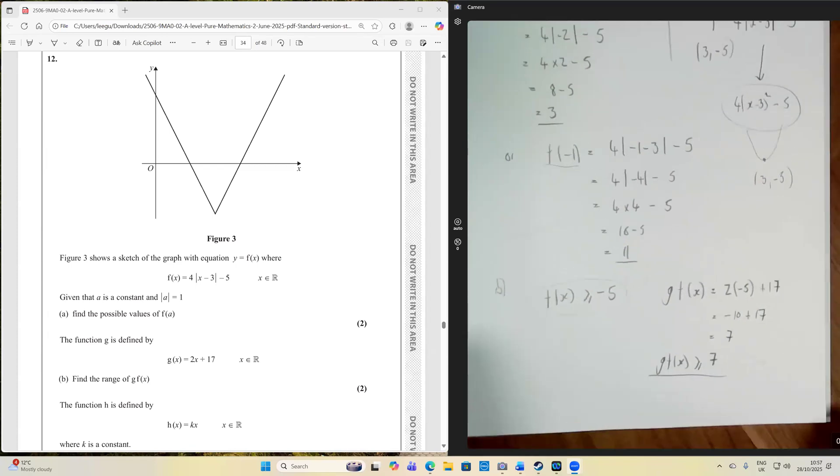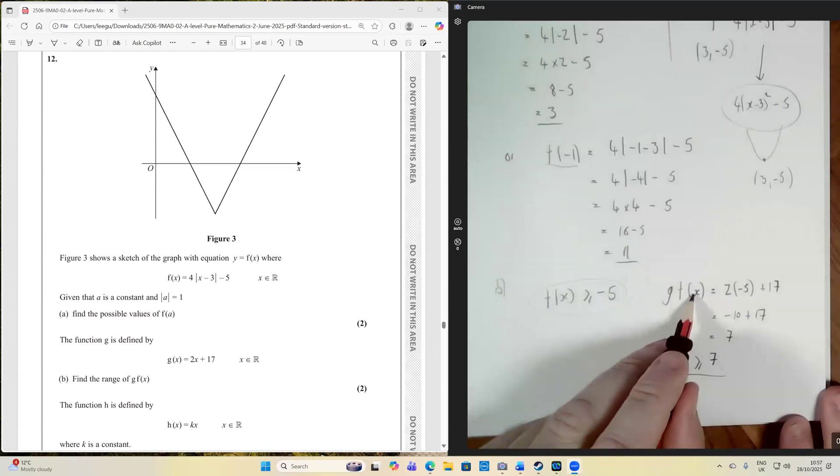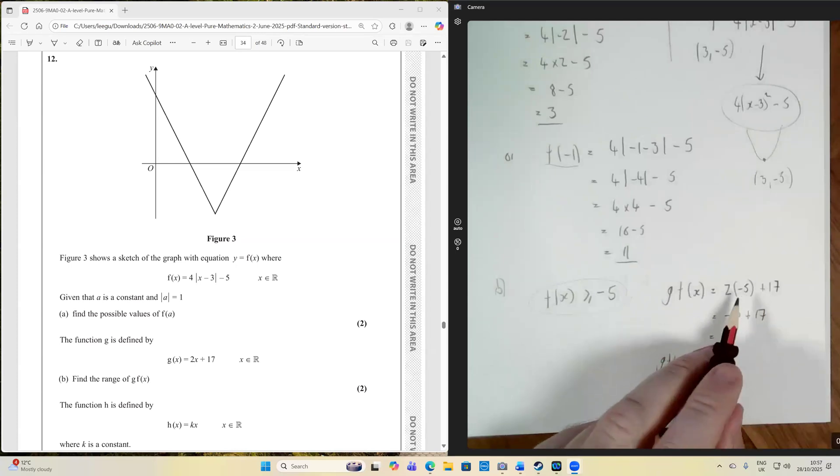Now, we want to find the range of values of g of f of x. So let's put that smallest value of f of x into g of x. We're going to put minus 5 into our function of g of x. So when we put minus 5 in, we get 2 times minus 5 add 17, which is minus 10 add 17. So that gives us 7.